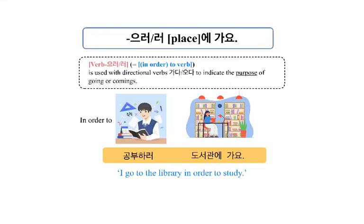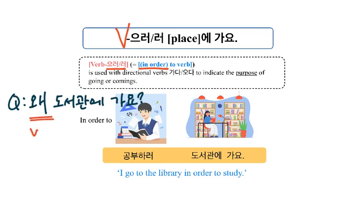여러분 안녕하세요. Verb 으러/러 place에 가다 — today we study this pattern. 으러/러 means 'in order to' in English. 왜 도서관에 가요? Why do you go to the library? 공부하러 도서관에 가요. I go to this place to do this action.